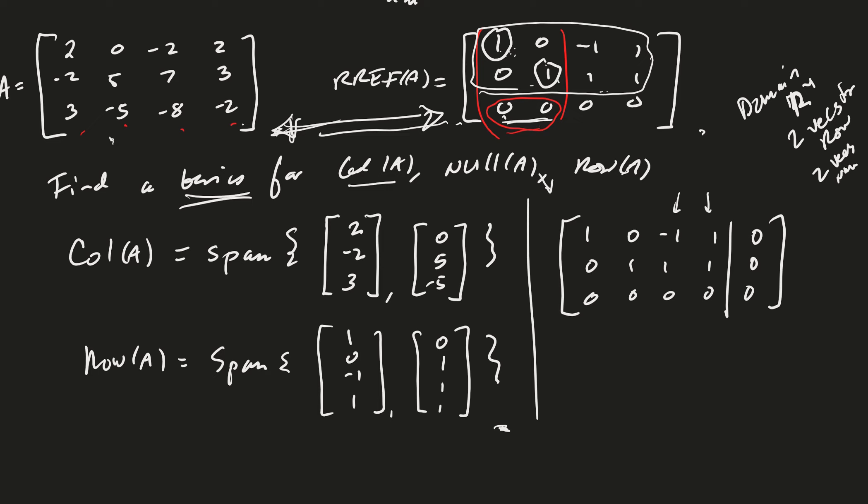So let's go ahead and write X1 is equal to, I'm going to be bringing those over to the other side of the equation. So that's going to be X3 minus X4. X2 is equal to minus X3 minus X4. X3 is free. And X4 is free.